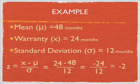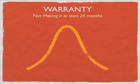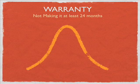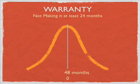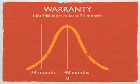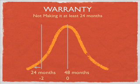Let's put this on a visual map. We're asking: what's the probability of an iPhone not making it to 24 months — breaking before its warranty period? We place 48 months (z = 0) in the middle, then mark 24 months (z = −2). We're interested in all the area to the left of 24 months — that's the green shaded area.